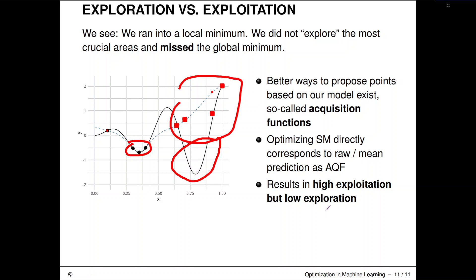In the next section, we'll discuss what we usually do in Bayesian optimization: what better acquisition functions are, what the expected improvement criterion is, what the lower confidence bound is, and so on.